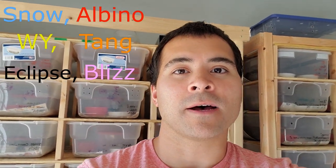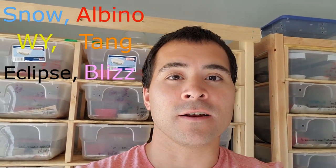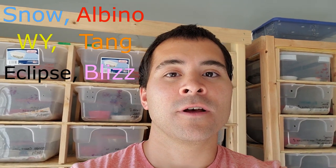We talked about snow, we talked about albino, we talked about white and yellow, we talked about tangerine, eclipse, and lastly blizzard. So what happens when you mix those genes together? Is it possible to mix those genes together? Let's find out.